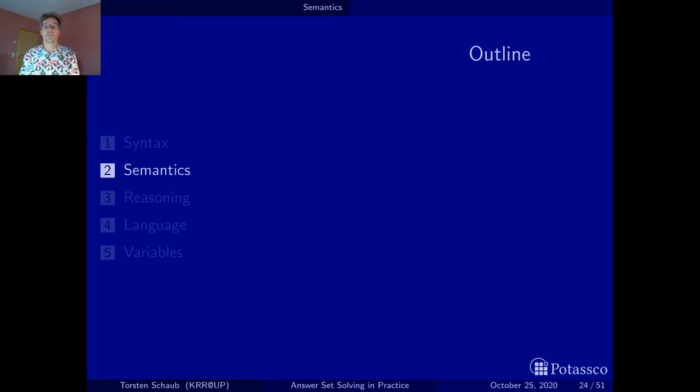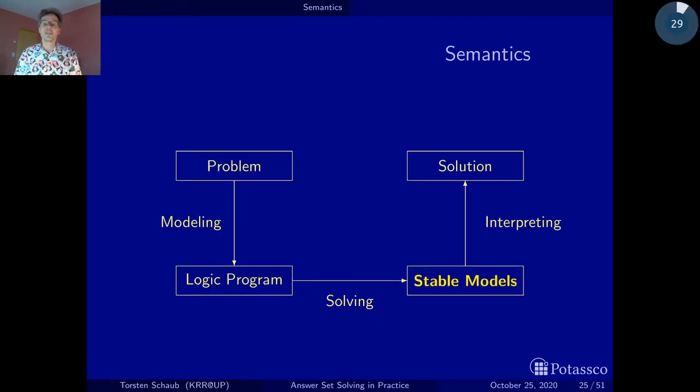Hello and welcome back to the second section on the formal foundations of answer set programming. In this section we deal with semantics, more precisely, the stable model semantics. The idea of this semantics is that once you have formulated your problem as a logic program, you can associate with this logic program several stable models. Each stable model will represent an alternative solution to your original problem.